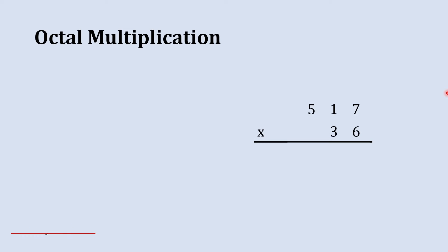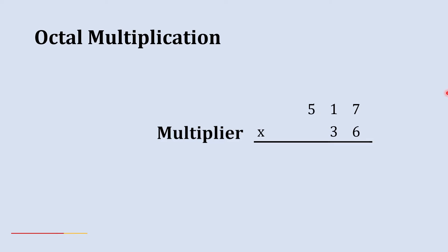Here we have two octal numbers which we are going to multiply. In order to do multiplication of an octal number, we are going to multiply each digit of the multiplier with the multiplicand.